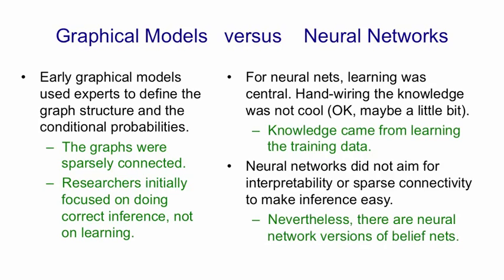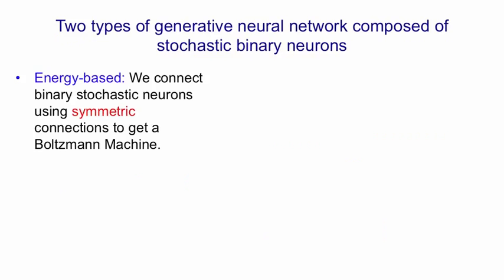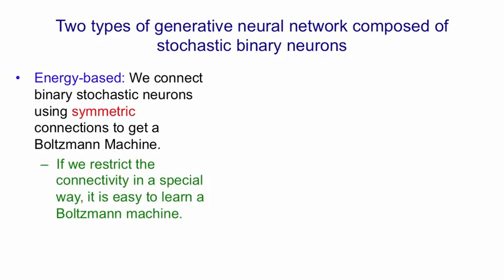Nevertheless, there are neural network versions of belief nets. If we think about how to make generative models out of idealised neurons, there are basically two types. There are energy-based models, where you connect binary stochastic neurons using symmetric connections, and then you get a Boltzmann machine. A Boltzmann machine is hard to learn, but if we restrict the connectivity, then it's easy to learn a restricted Boltzmann machine. However, when we do that, we've only learned one hidden layer, so we're giving up on a lot of the power of neural nets with multiple hidden layers in order to make learning easy.